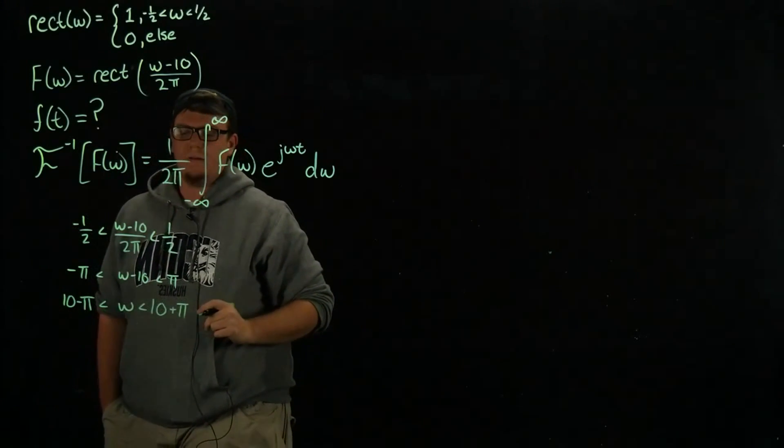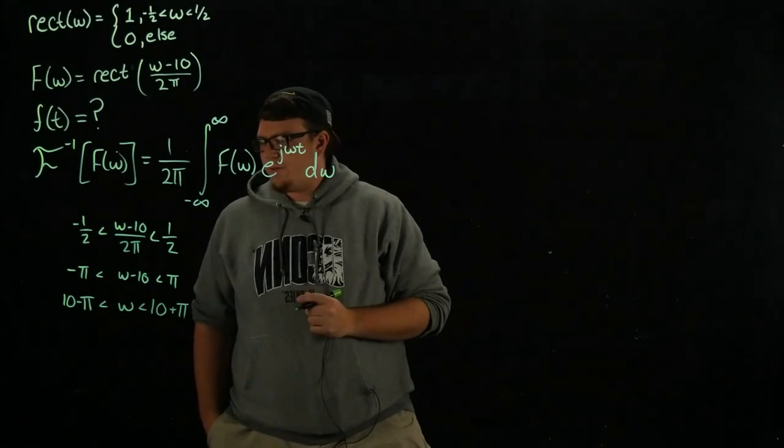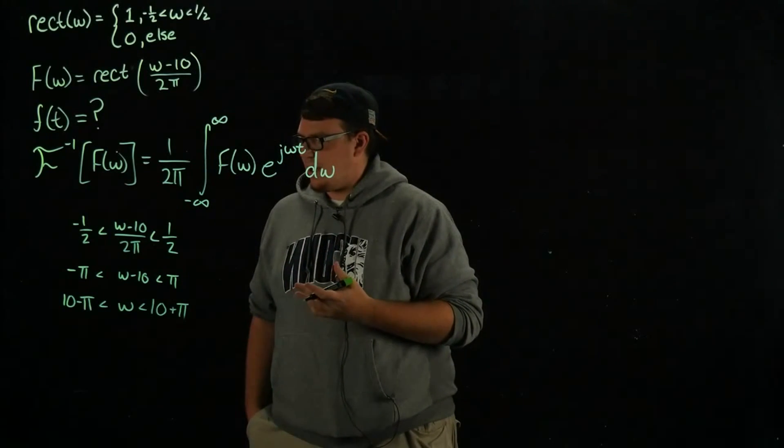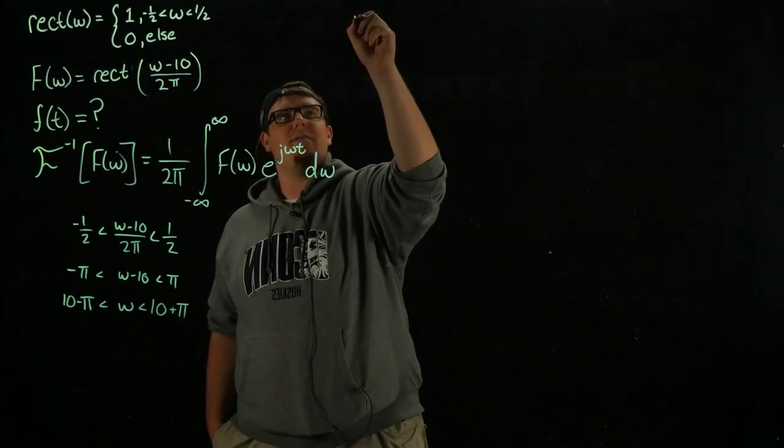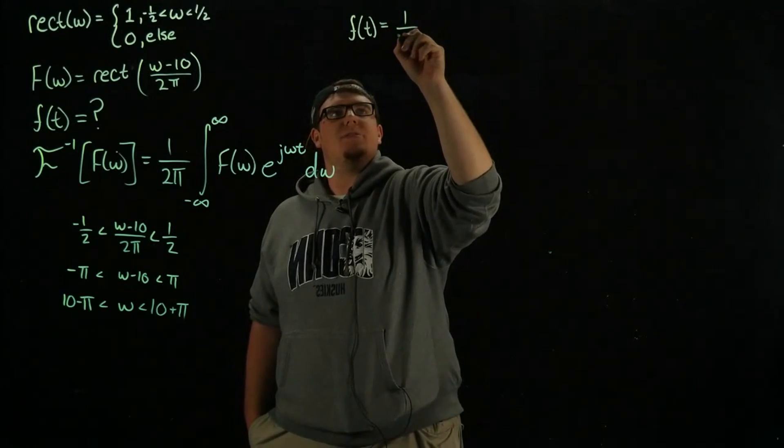Our function is 1 and otherwise it will be 0. From here we can pretty easily do this integral. Out front we have that f of t is going to be equal to 1 over 2 pi.